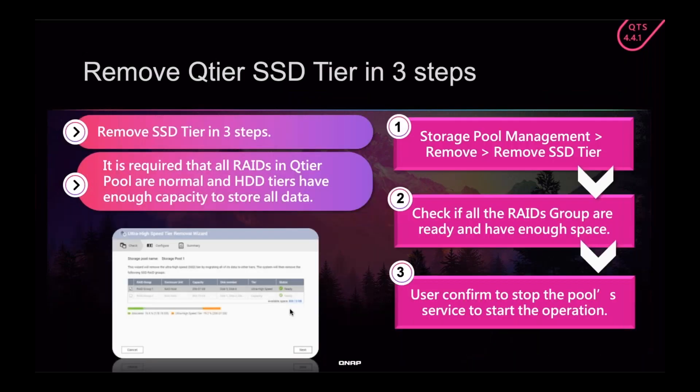Removing a Q-tier pool is pretty simple: go to storage pool management, select remove, then remove SSD tier. You want to check that all the RAID groups are ready and have enough space, and confirm stopping the pool service to start the operation.